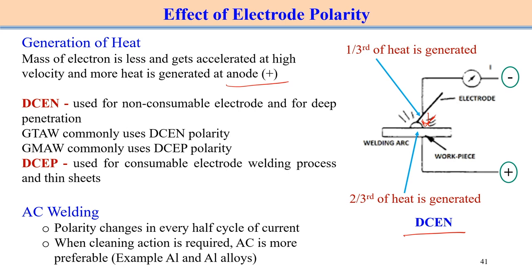With DCEN polarity, maximum heat is generated on the workpiece and minimum on the electrode. When we do not want to consume the electrode, we use DCEN polarity because less heat is generated on the electrode side. That is why in GTAW, we commonly use DCEN polarity — since GTAW uses a non-consumable electrode, we want less heat on the electrode and maximum heat on the workpiece to melt it.